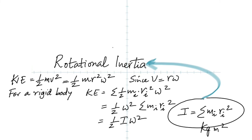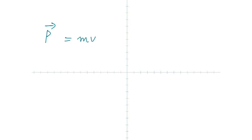It'll make sense if I give you a formula. Who remembers the formula for linear momentum? P equals mass times velocity. In rotation, I can give you the formula for angular momentum: L equals I times omega.